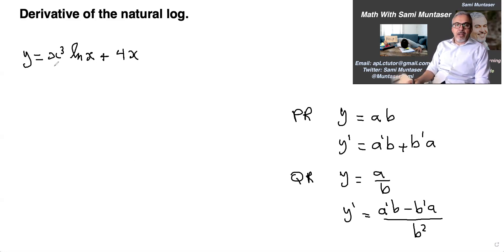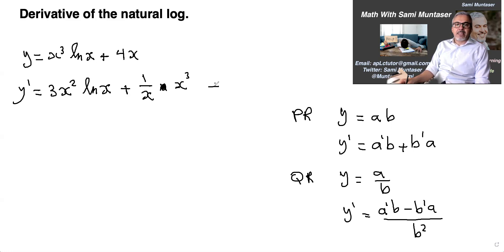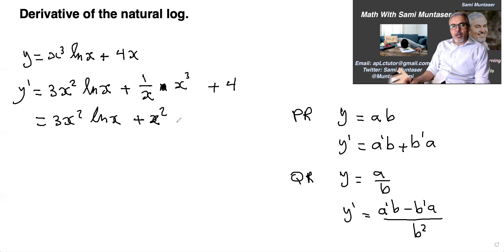Here we have a product, so we take the derivative of a, which is x cubed — the derivative is 3x squared — times b, which is ln x. Plus the derivative of b: the derivative of ln x is 1 over x, times a which is x cubed. Plus the derivative of the constant 4, which is 0. This gives us 3x squared·ln x plus x squared plus 4, because the x and x cubed cancel to give x squared. That's the answer for this one.